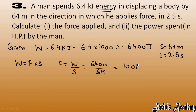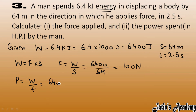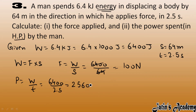Force is 100 newtons. Now we calculate power. Power is work done per unit time. Work done is 6400 joules and time is 2.5 seconds, so we get 2560 watts. Now we have to convert this into horsepower.